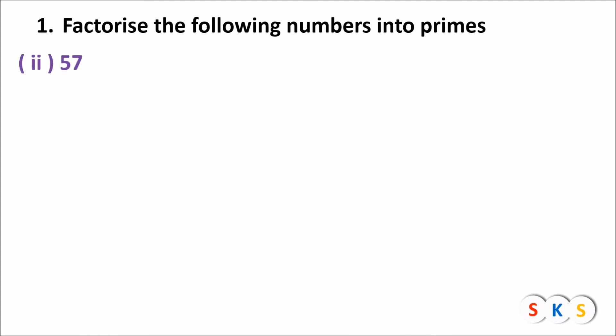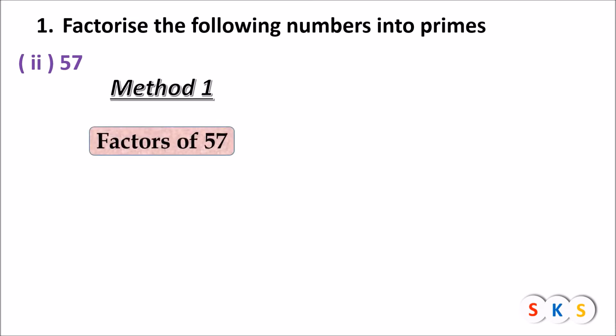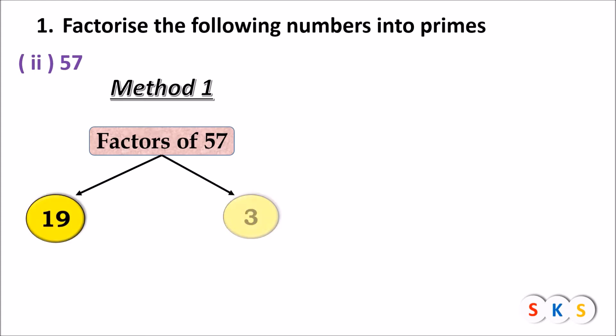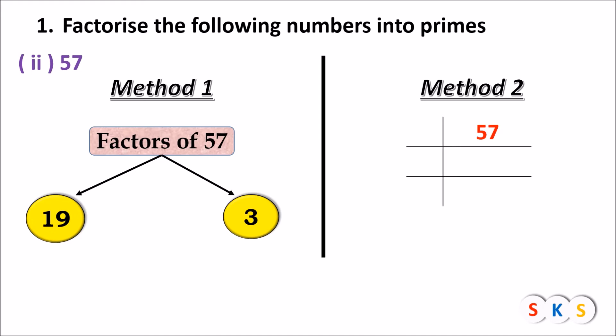Question number 2: 57. Method 1: We find factors of 57. Taking two numbers whose product is 57: 19 × 3 = 57. So 57 = 19 × 3. Both 19 and 3 are prime numbers, so they cannot be factorized further. The prime factorization of 57 is 19 × 3.